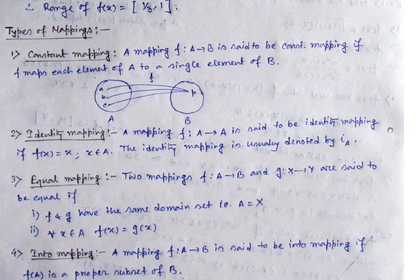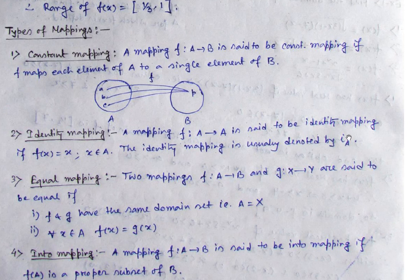Identity mapping ke liye do set alag nahi hote. For identity mapping, the sets must be equal because identity mapping takes an element and maps it back to the same element — f(x) = x. So domain and co-domain are the same, meaning the function must be from A to A. Identity mapping is written as I_A. If it were B to B, we would write I_B.